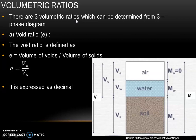There are three volumetric ratios which can be found out from a three-phase diagram. The first one is void ratio. It can be defined as the ratio of volume of voids to the volume of solids. In the three-phase diagram, which consists of three phases — soil, water, and air — the volume of voids is represented by VV and volume of solids is represented by Vs. So void ratio E is the ratio of VV to Vs, and it is usually expressed as a decimal.